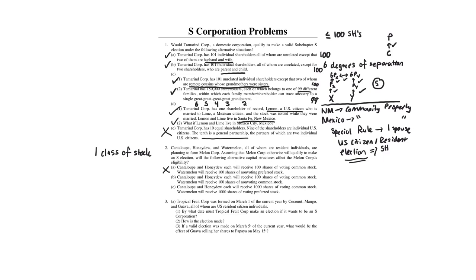In B, Cantaloupe and Honeydew each receive voting common and Watermelon receives non-voting common. This is fine — you can have differences with respect to voting and non-voting common. In C, Cantaloupe and Honeydew each receive voting common and Watermelon receives voting preferred. If you see any preferred, you can't be an S-corporation. Preferred stock always has a preference — that's why it's called preferred. The main preference is with respect to distribution and liquidation.